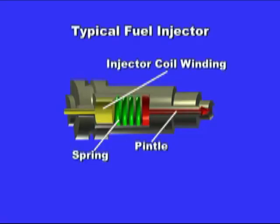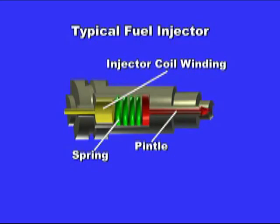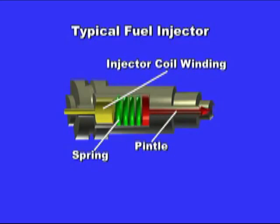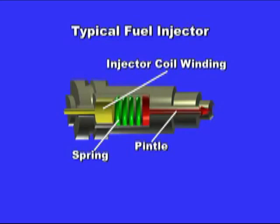The modern fuel injector is in charge of providing a measured amount of fuel to the engine. Its internal construction is composed of a wire coil, the return spring, pintle, and the body casing.